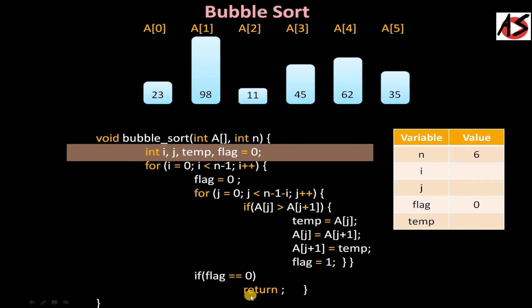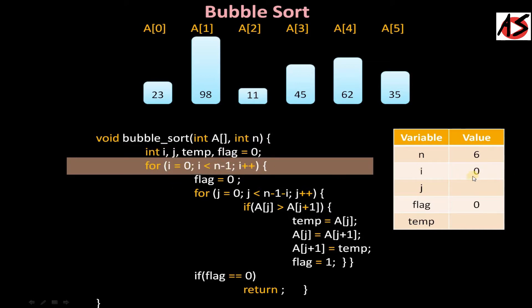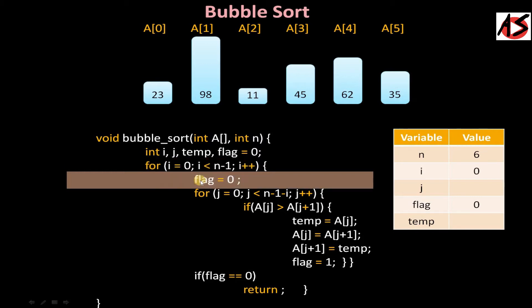We go into the outer for loop: i = 0, condition i < n-1 (which is 5), so condition is true. Why n-1? Because if you have 6 elements, you don't need 6 passes — after 5 passes, the remaining 1 element is always sorted. So you take n-1 instead of n. Inside the loop, we set flag = 0, then enter the inner for loop with j = 0.